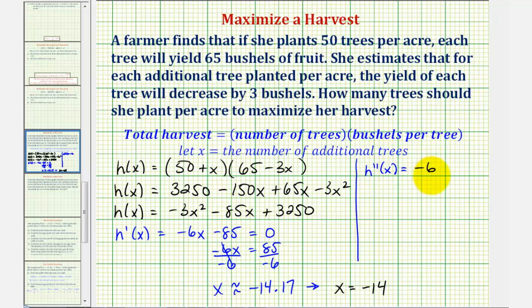Because the second derivative is always negative, the function is always concave down, which is good news because that means that our critical number, we have a maximum function value, and therefore the function is maximized.